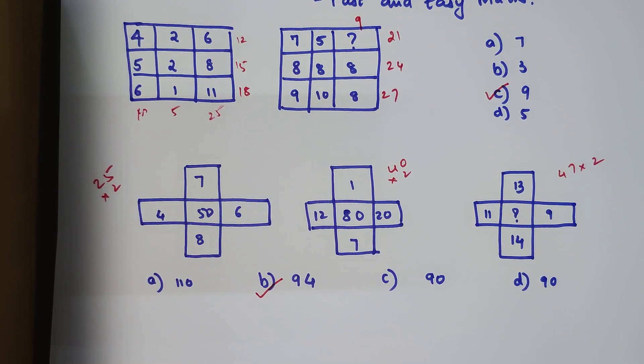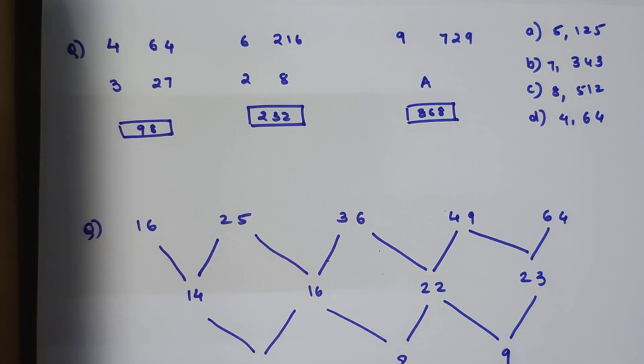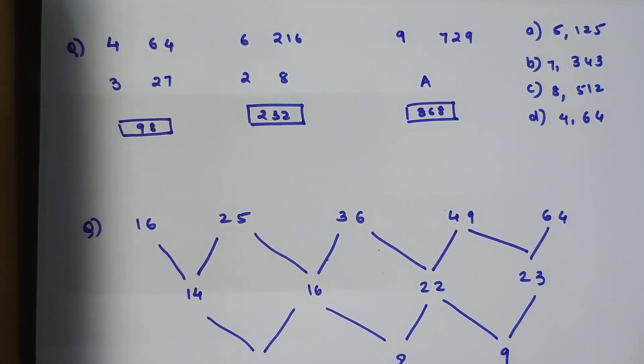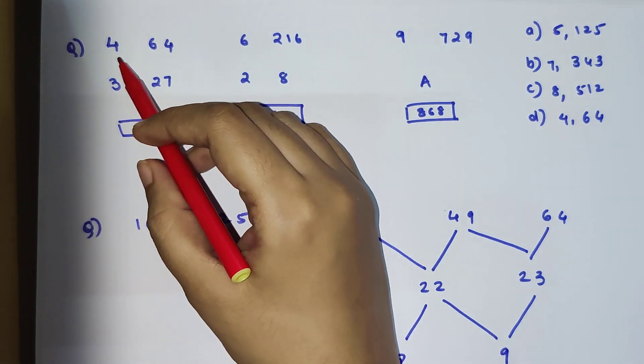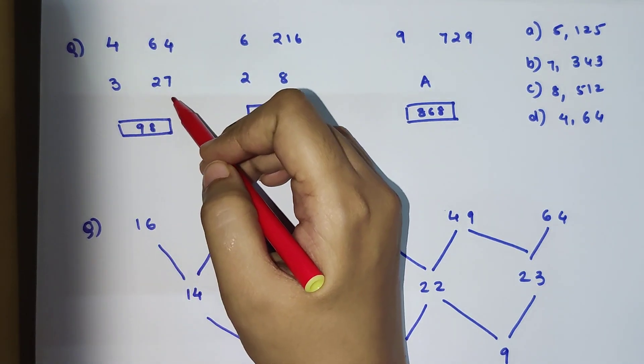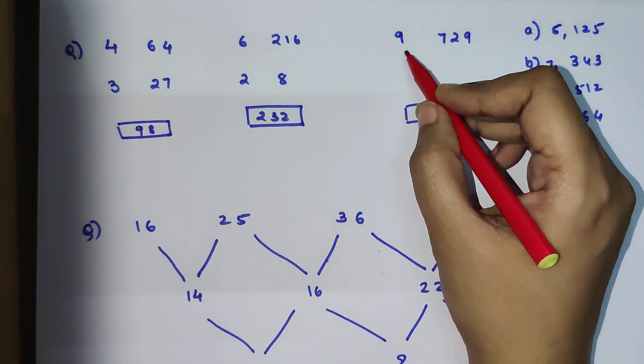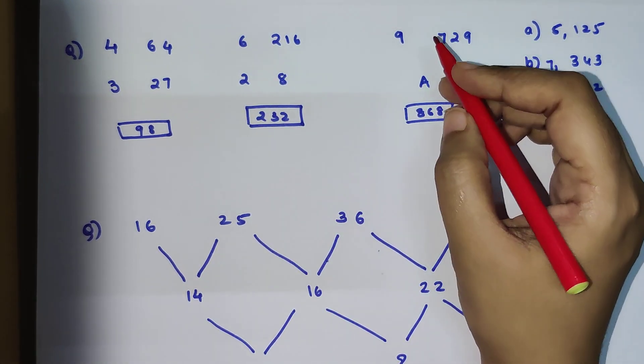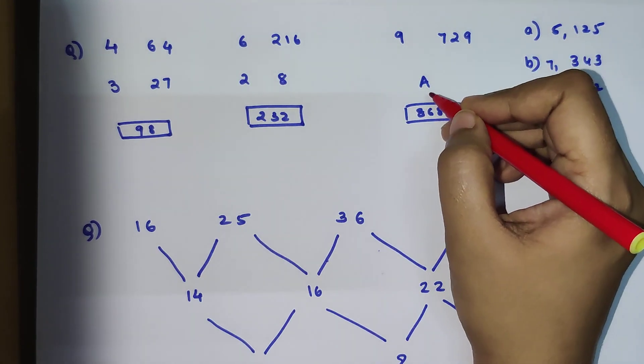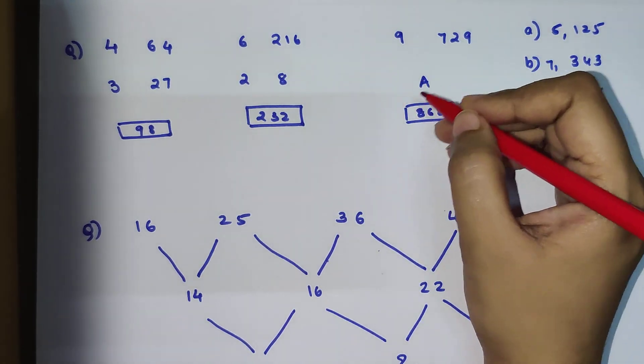Now very quickly, let's solve 2 more questions on this particular topic. The next set of questions is, they have given us numbers 4, 64, 3 and 27. Then the next set is 6, 216, 2, 8, and the next set is 9, 729, 7 and 8, and we need to find what is the value of 8.